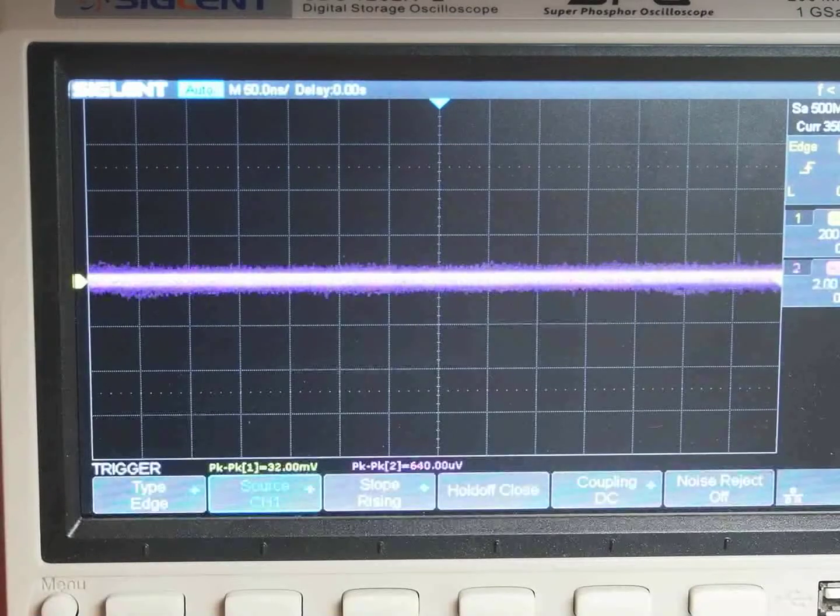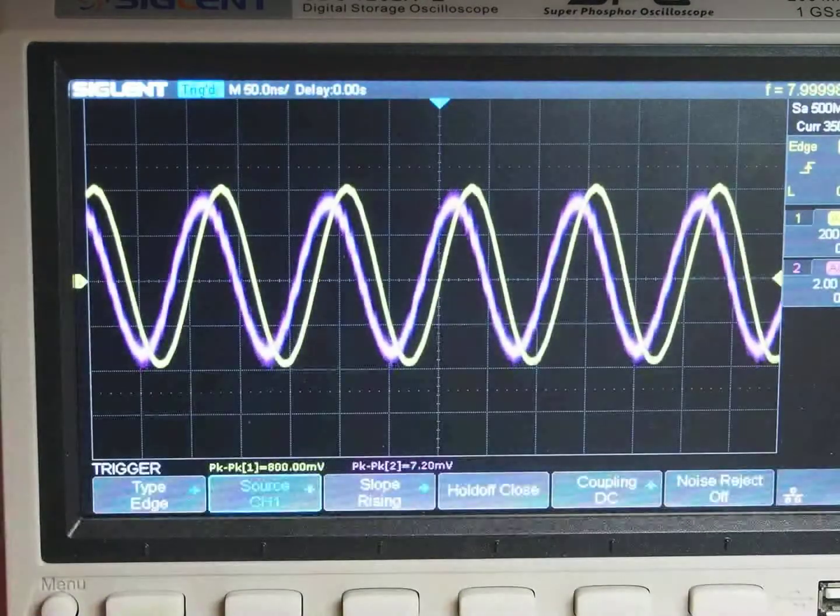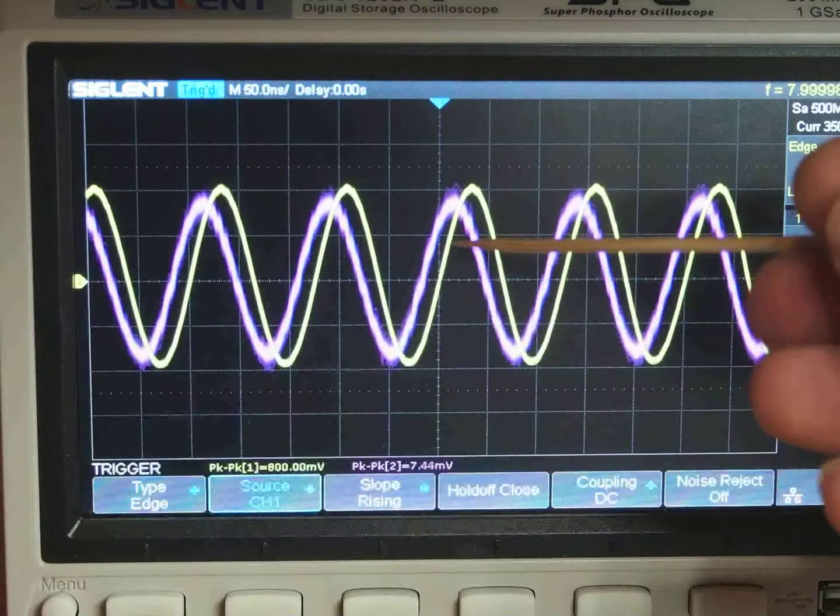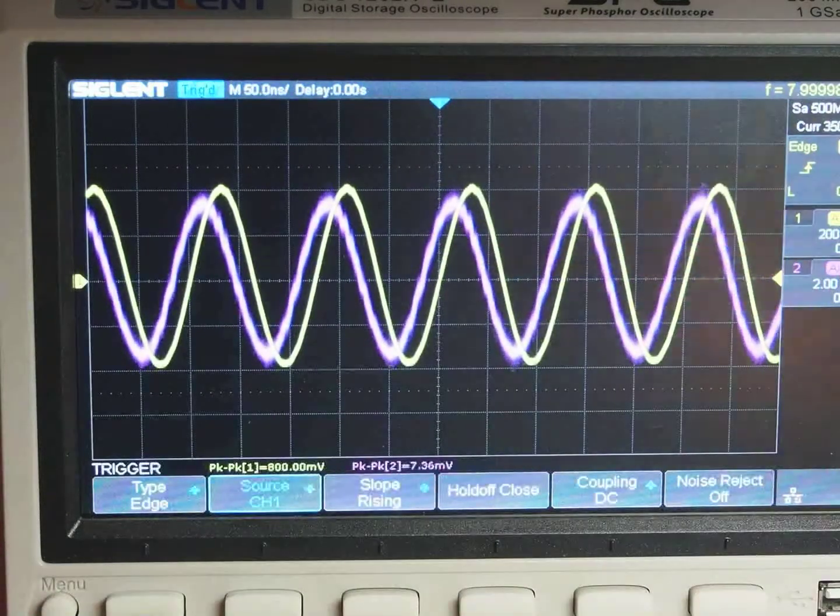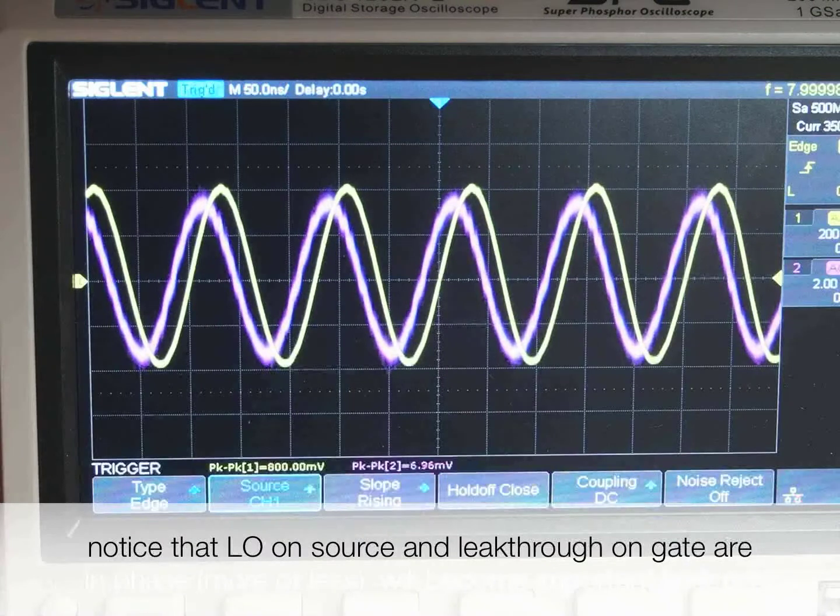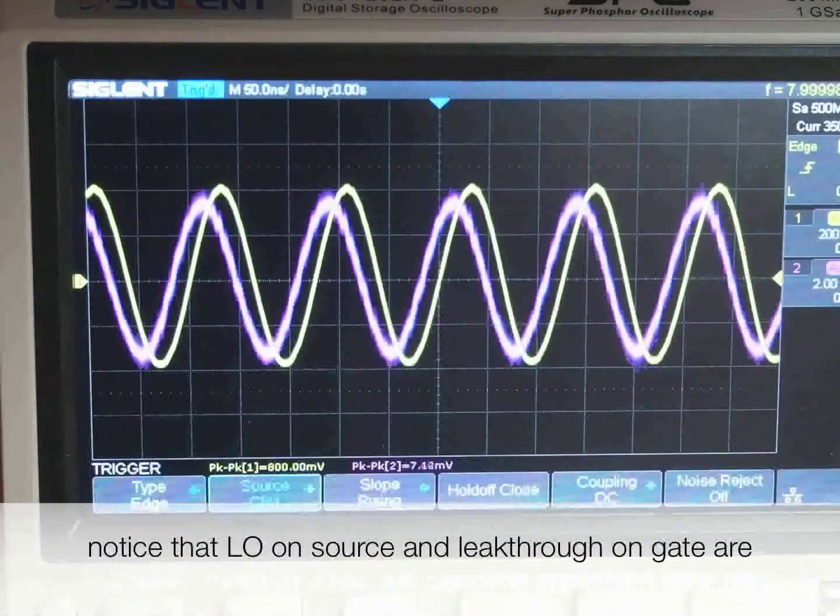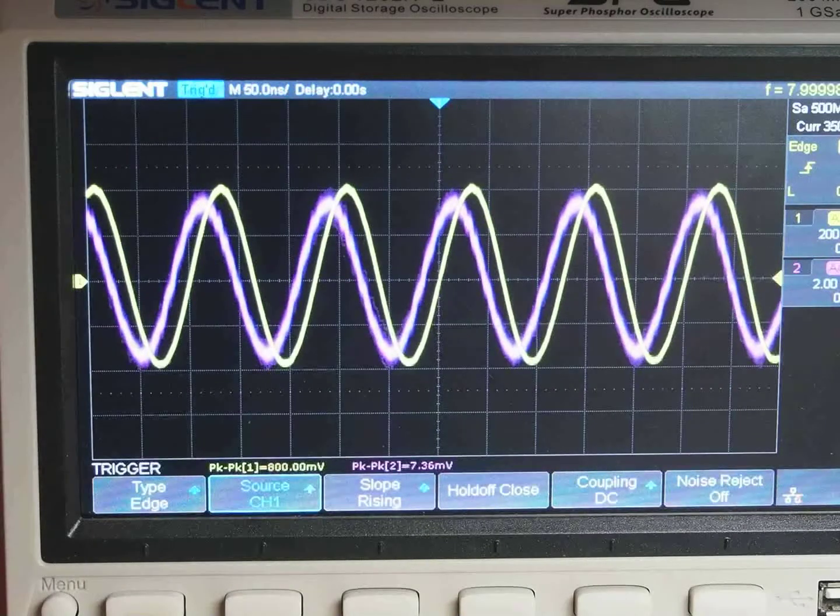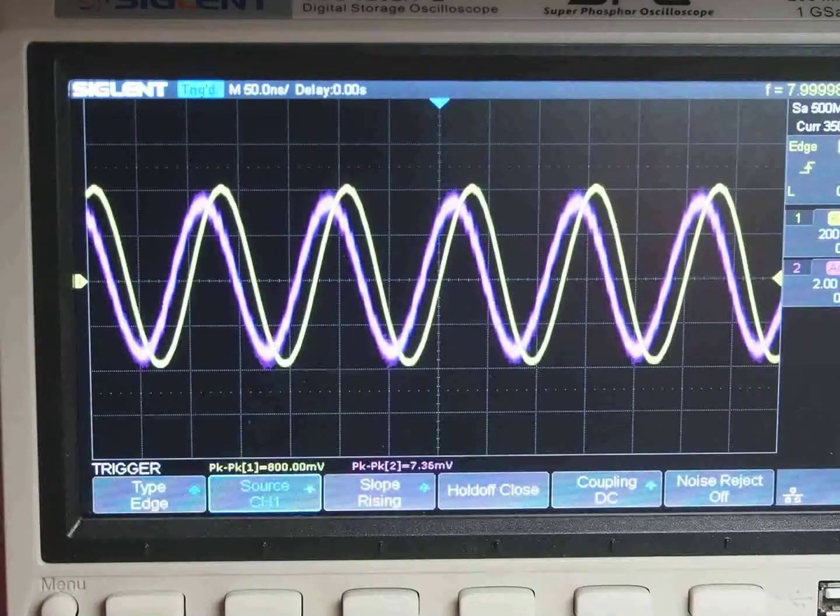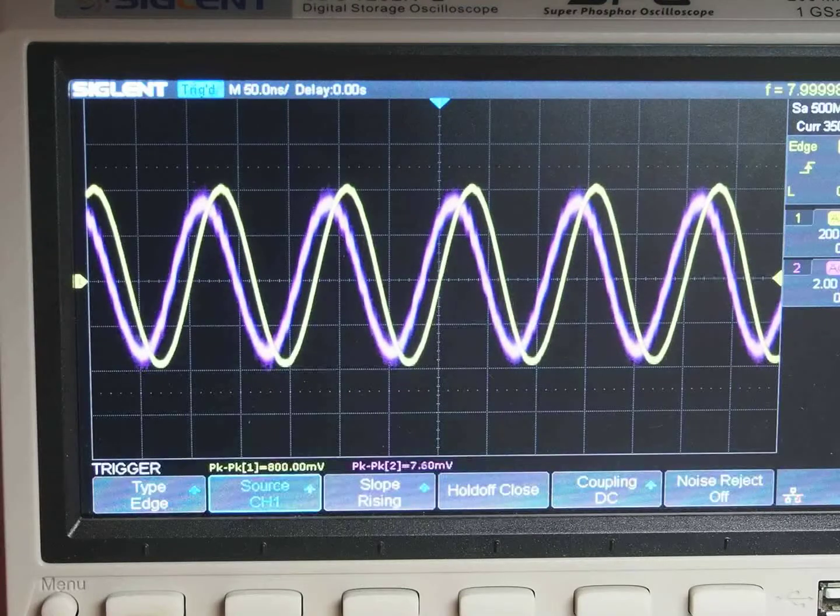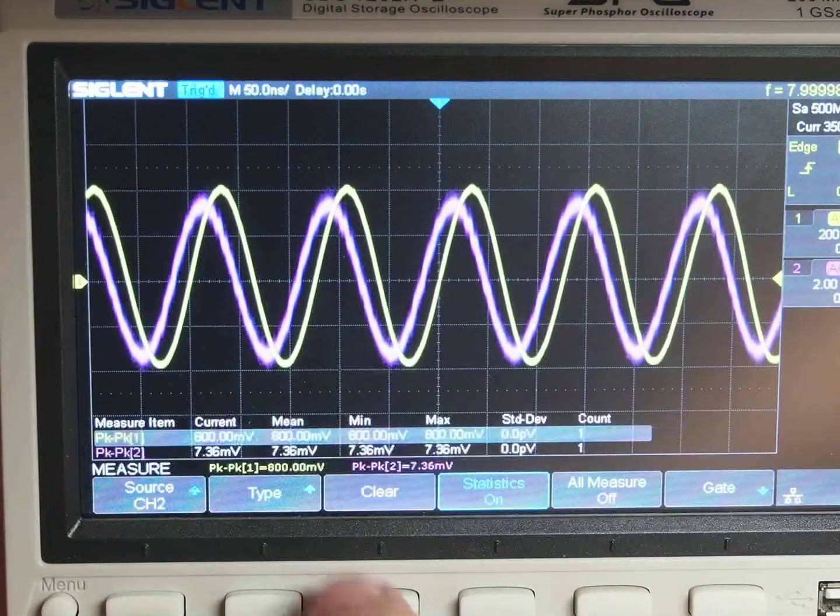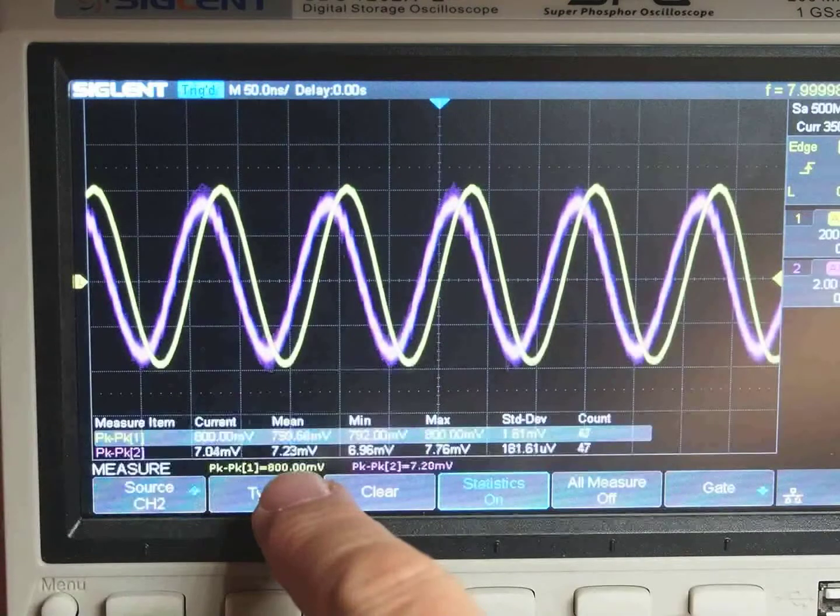First I put the LO on it, which is 8 MHz as you can see. The yellow signal is at the source and the purple signal is at the gate. So let's take some measurements. The peak to peak voltage of the LO is 800 millivolts, so the amplitude is 400 millivolts. The leak through of the LO at the gate is, let's take some statistics, 7.2 millivolts, so that makes 3.6 millivolts.